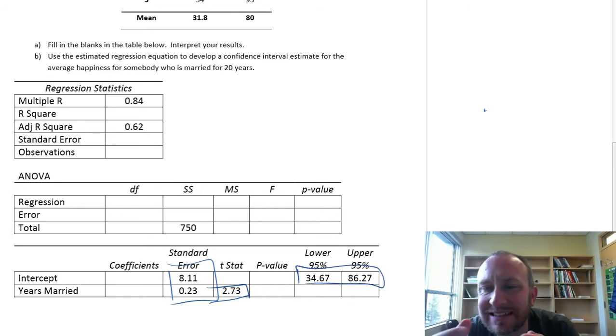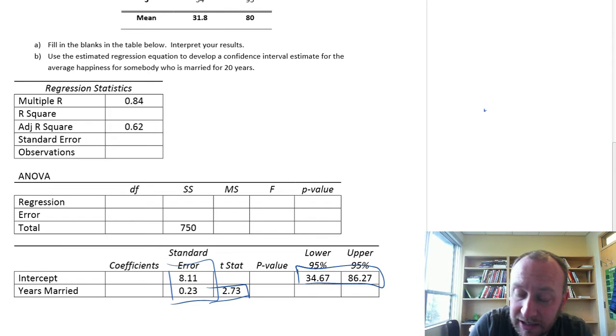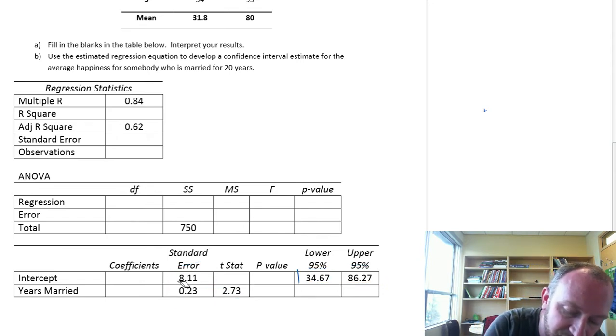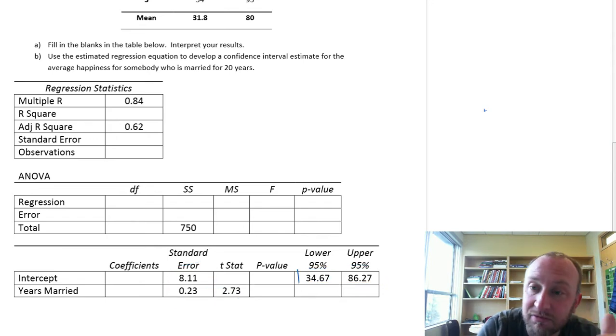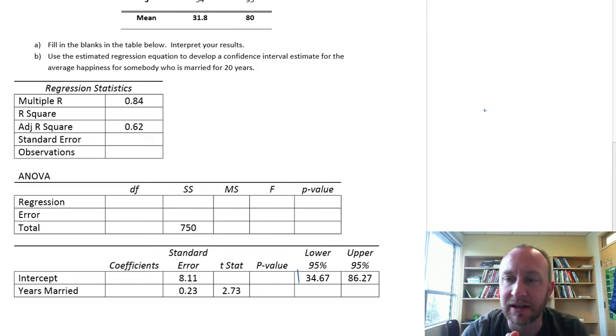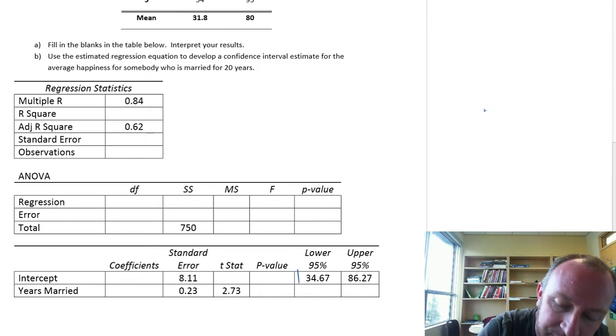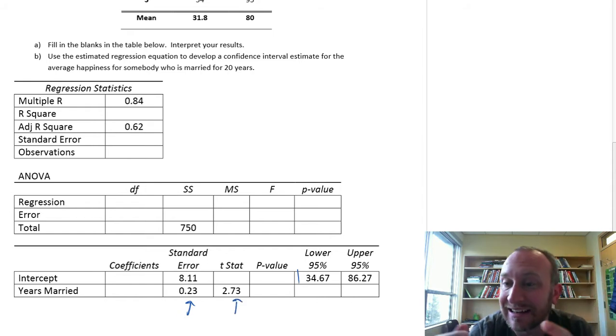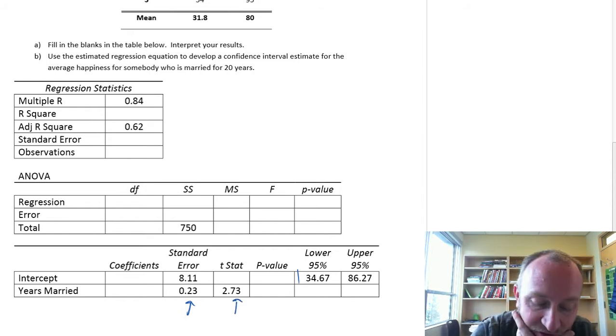So we can use this information as shortcuts to getting our coefficients. We have to remember, or maybe if your instructor gives you the formula sheets, if we remember how these numbers are obtained, that can give us those shortcuts to finding the coefficients.